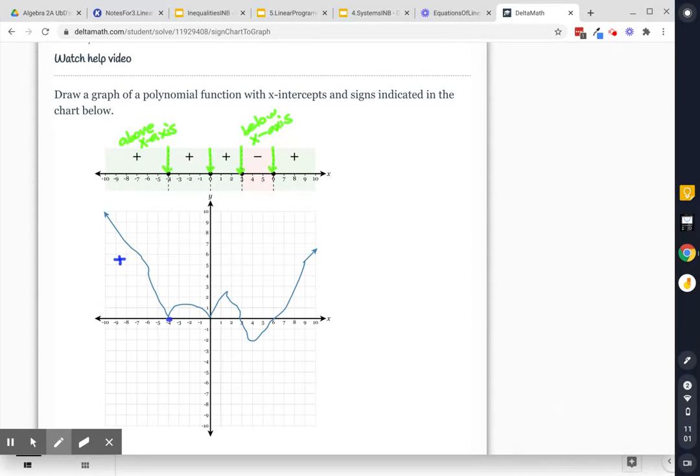At negative four, I don't cross over, but I better at least touch. I stay positive again. I touch again at zero, but I stay positive.